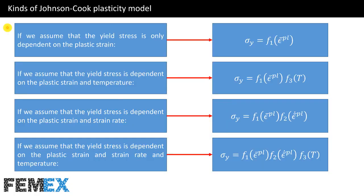Now I want to talk about the kinds of Johnson Cook Plasticity Model. If we assume that the yield stress is only dependent on the plastic strain, we have the first form of the Johnson Cook Plasticity Model. If we assume that the yield stress is dependent on plastic strain and strain rate, we have a second form.